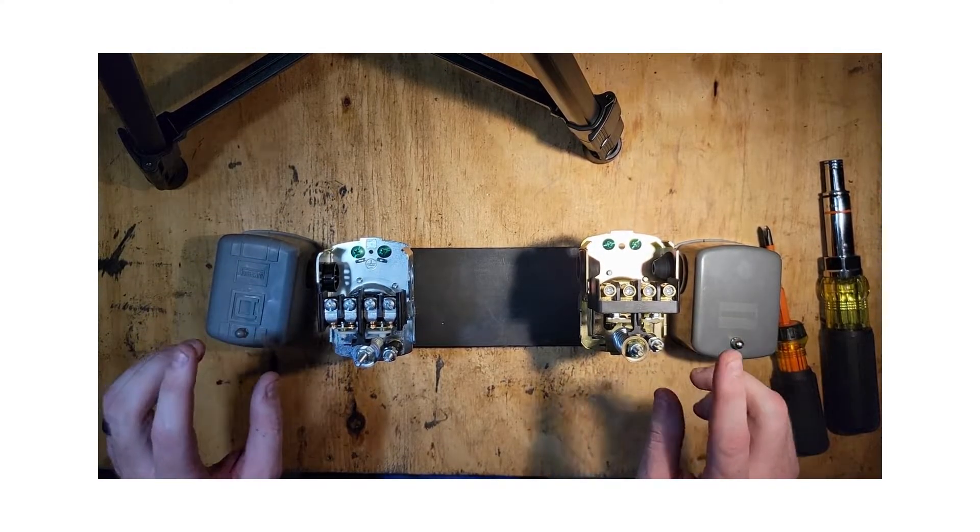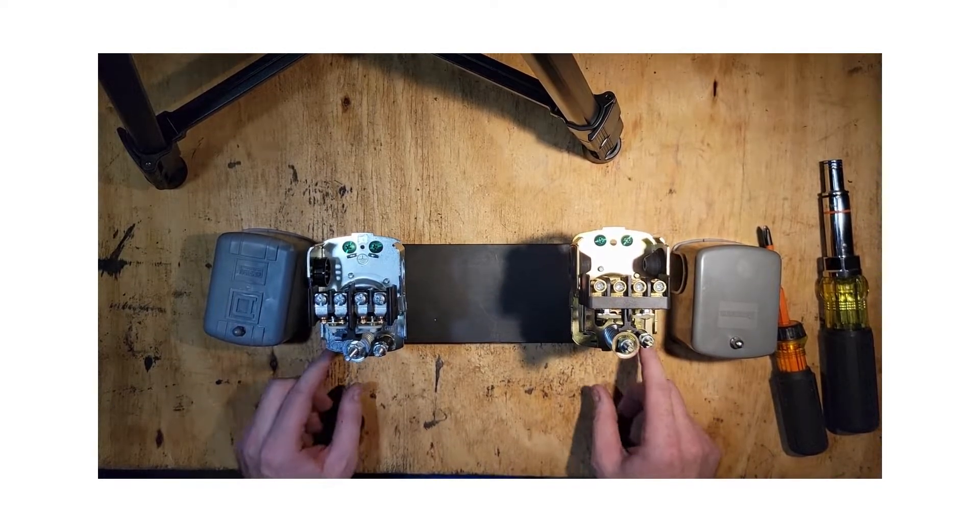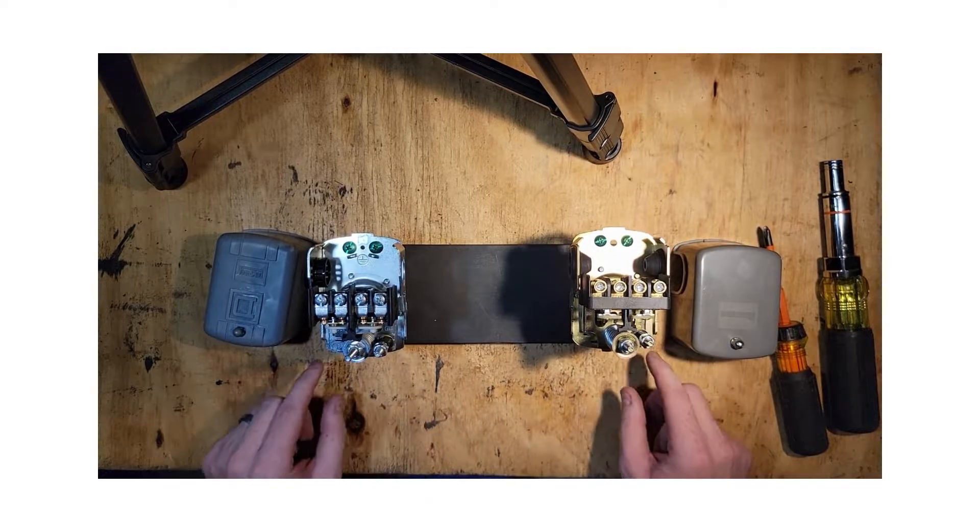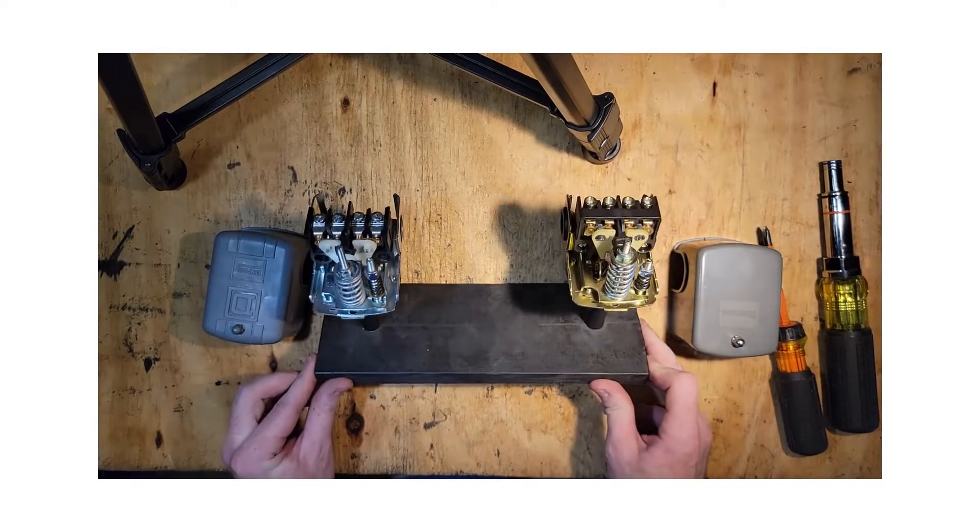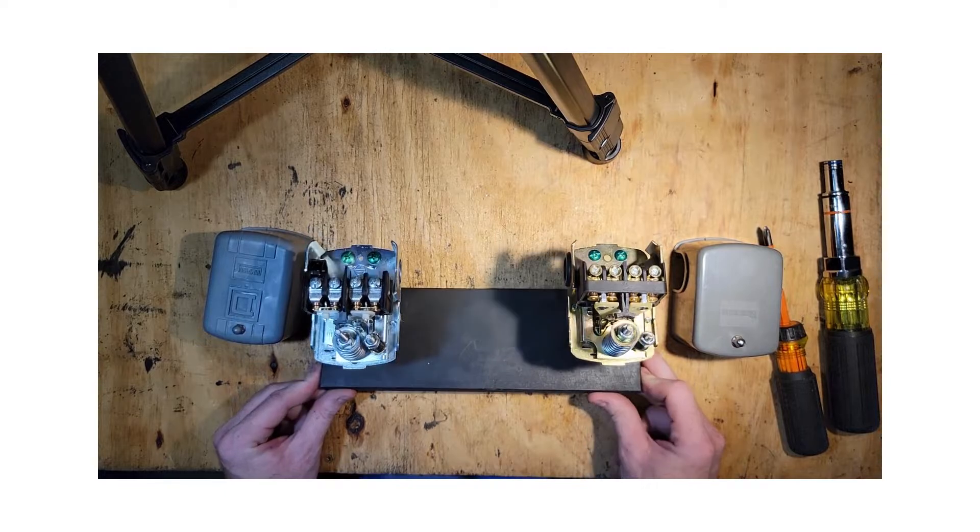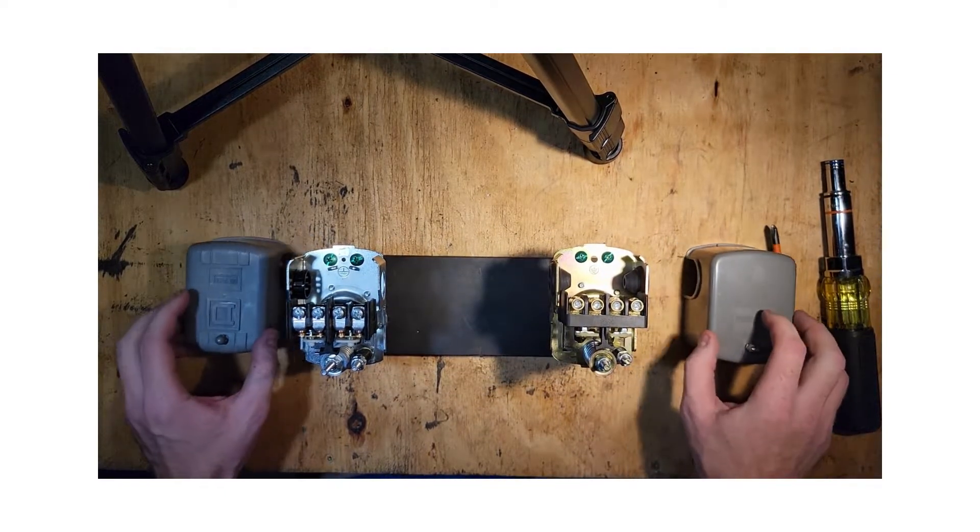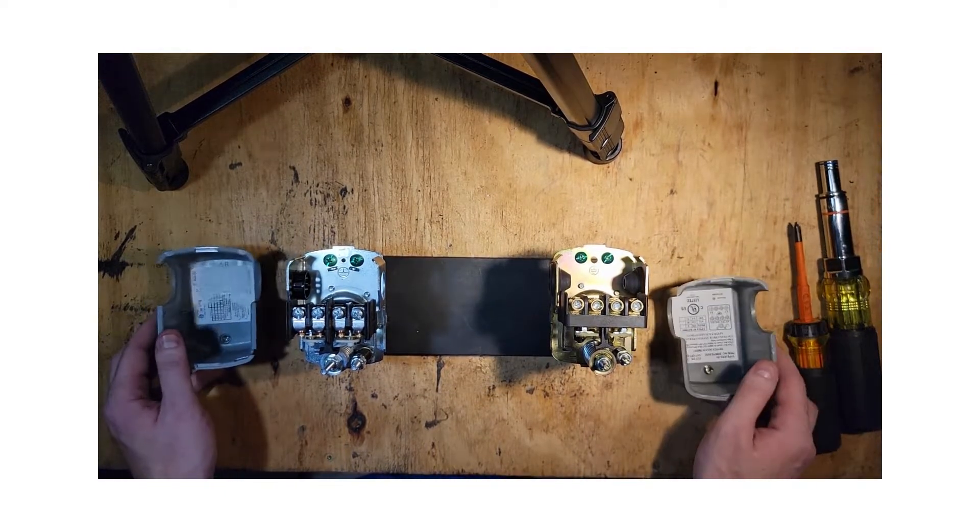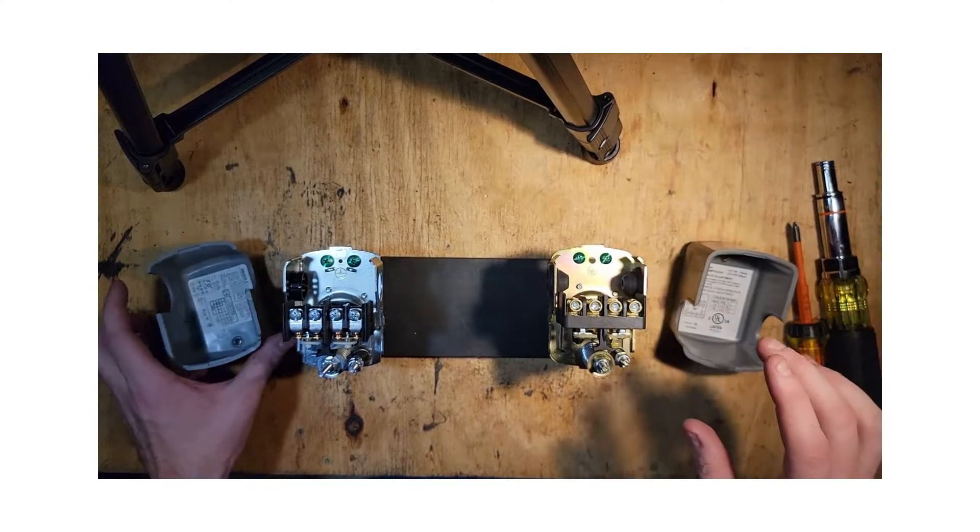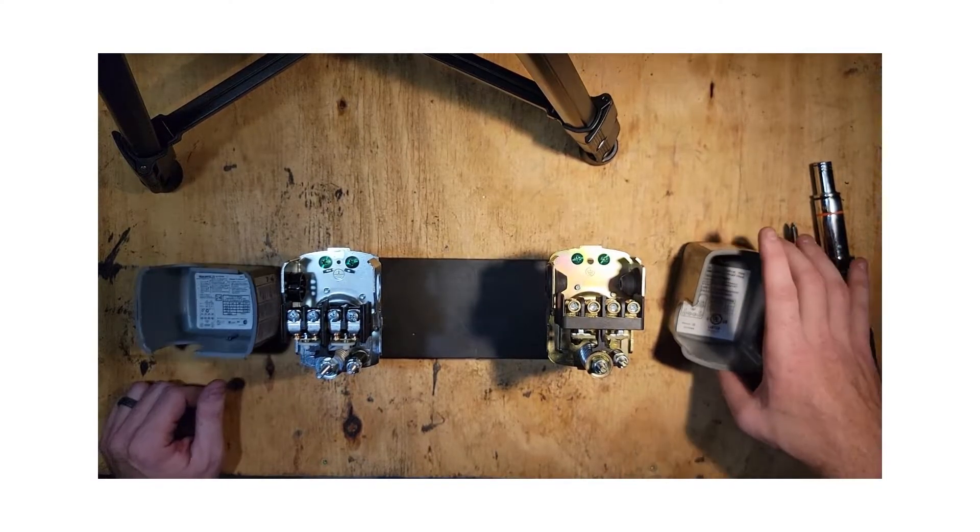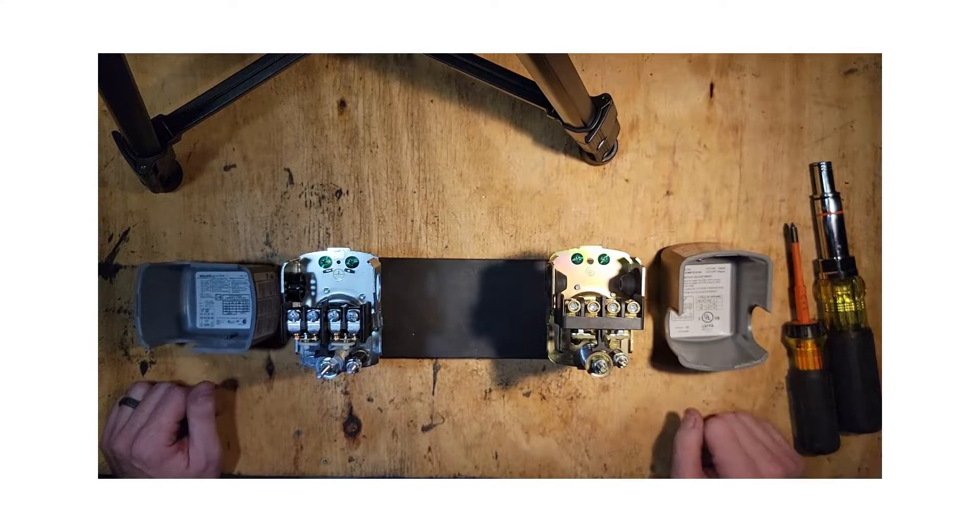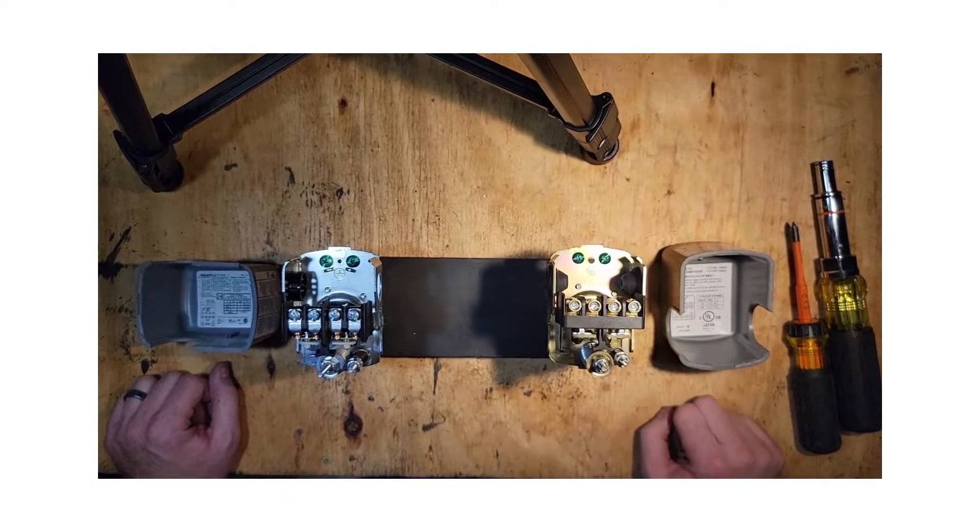Looking at these two switches you're going to notice two nuts and two springs. Each one does something different on the switch. If you look inside the cover of your pressure switch, assuming the sticker is still there, it actually provides you with the instructions for adjusting these switches.